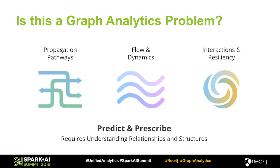One of the questions we get a lot is: graphs are cool, but how do I know whether the problem I'm looking at is actually a graph analytics problem? There are usually three different major buckets. One is understanding how things propagate through a network — disease propagation or traffic propagation. Another is flow: what happens when I add a constraint to my network? And then interactions and resiliency — a lot of community detection, influence, understanding how things may break apart or become more cohesive, and how links might be predicted in the future.